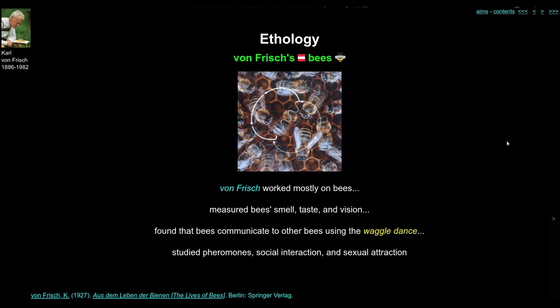Our third ethologist is von Frisch, also an Austrian like Lorenz, and he's famous for bees. First of all, he studied bees' sensory perceptions — smell, taste, vision — and discovered they were remarkably sensitive to these things, to sugary things and coloured things. He also found out that bees communicate to other bees about the sources of food.